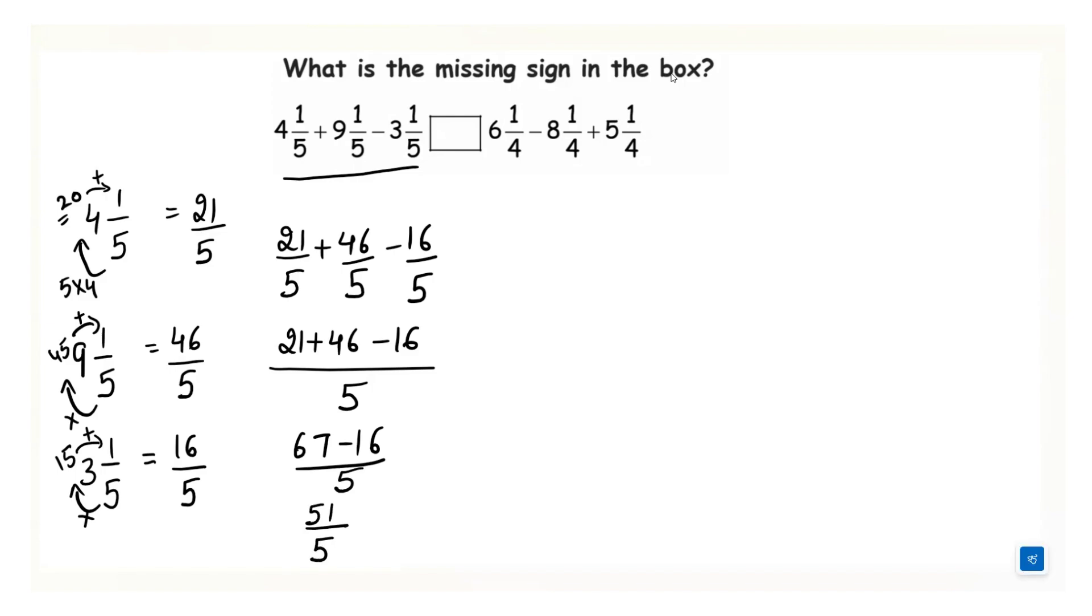Now let's do the part which is given after the box. So 6 1 over 4 can be written as 6 into 4, 24 plus 1 is 25 over 4. Then 8 1 by 4 can be written as 4 times 8 is 32, 32 plus 1 is 33 over 4. Then 5 1 by 4 can be written as 4 into 5 is 20 and 20 plus 1 by 4.